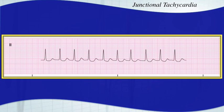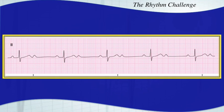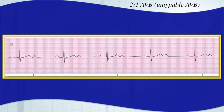This rhythm is a 2-to-1 AV block, or untypable AV block, because you can't decipher this between a Mobitz I and a Mobitz II. So we just call it a 2-to-1 AV block, or untypable.